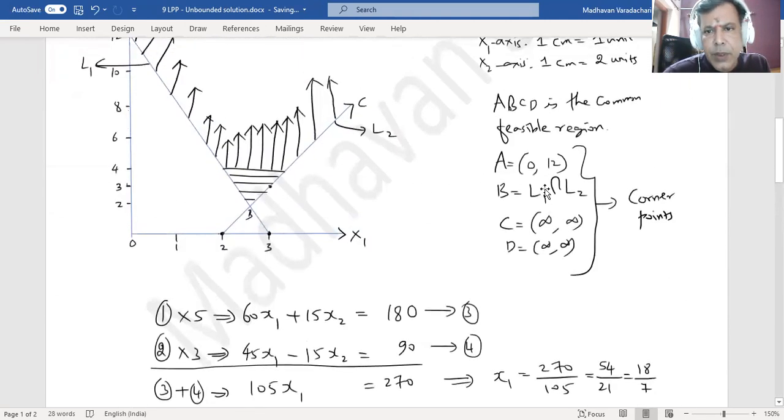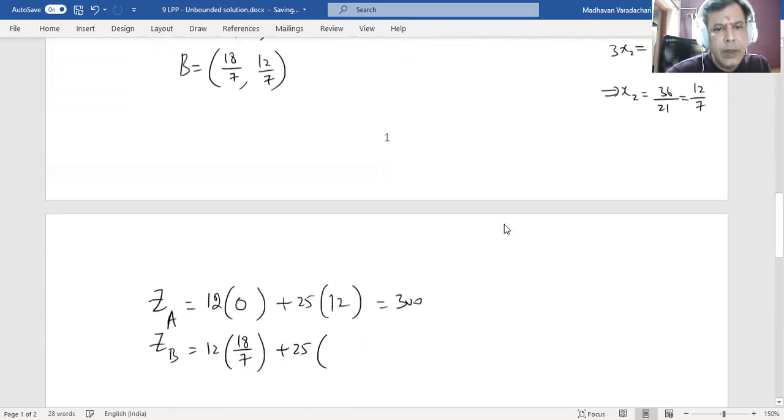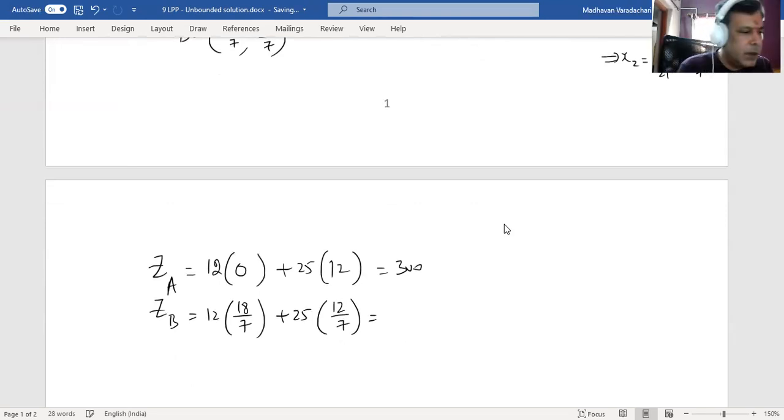What is that? 0 and 12. So what is 25 × 12? We get 300. Z of B is 12 × 18/7 + 25 × 12/7. What do we get? 12 × 18 = 216, 25 × 12 = 300. We get 516/7.